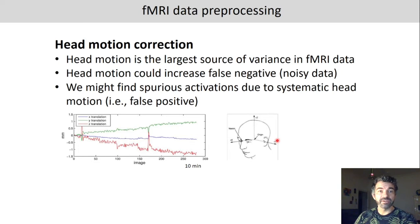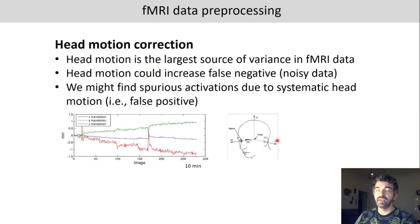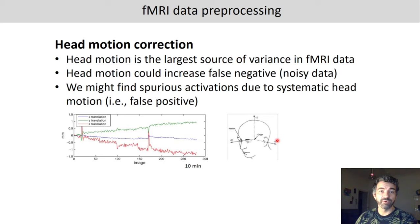Head motion is actually the largest source of variance in fMRI data. Head motion can increase false negatives due to noisy data, and we might also find spurious activations due to systematic head motion. For example, in a task where you're looking at spiders and you startle every time you see one, even if there's no specific brain activity in a region, the systematic head movement in relation to the task might create an apparent indication of such activity.